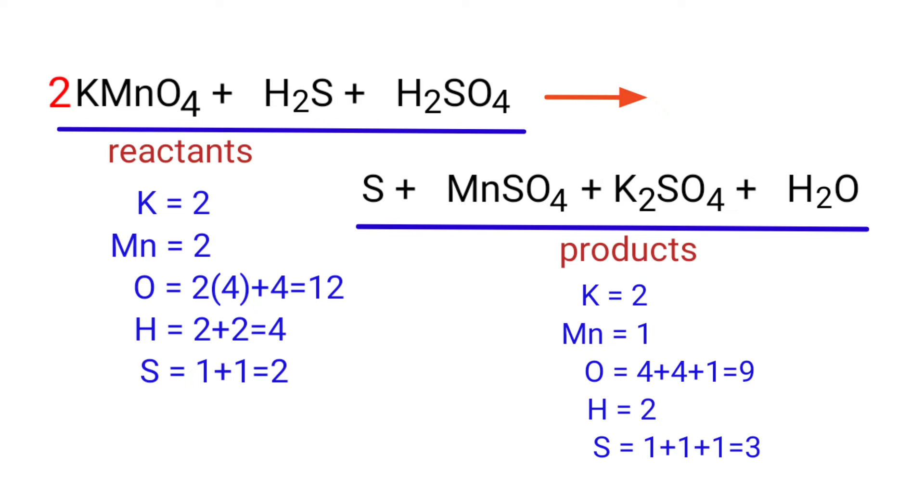Now we need to balance the manganese atoms. To do this, we need to put a coefficient of two in front of MnSO4.